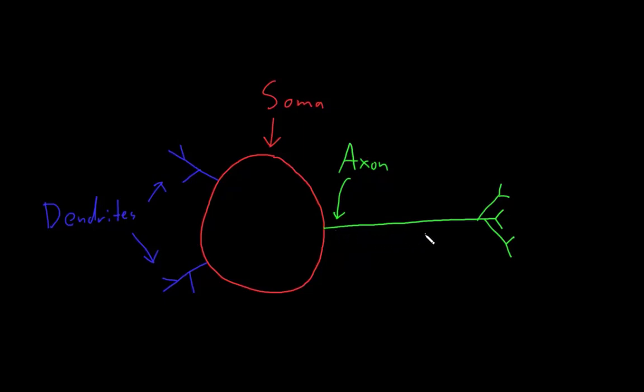Axons can be so long that they are dependent on systems that transport substances from the soma, which contains most of the organelles, to the axon terminals, and vice versa. Things have to be transported both directions, and the axon is dependent on those systems.